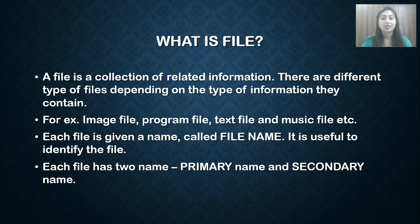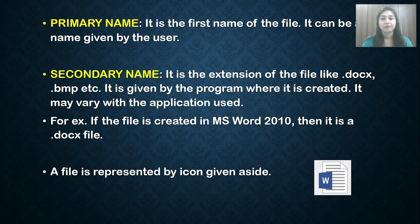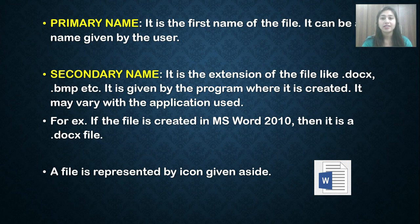Each file has two names. First is the primary name and second is the secondary name. Do you know what is primary name and secondary name? Let's see it. The primary name is the first name of the file — it can be a name given by the user. The secondary name is the extension of the file, like .doc, .bmp, etc. It is given by the program where the file is created. It may vary with the application used. For example, if the file is created in MS Word 2010, then it is a .docx file.